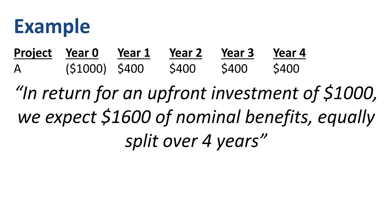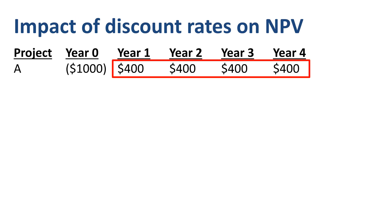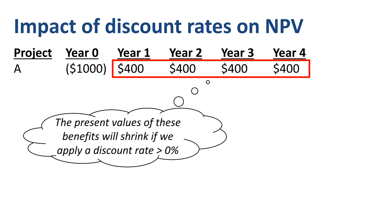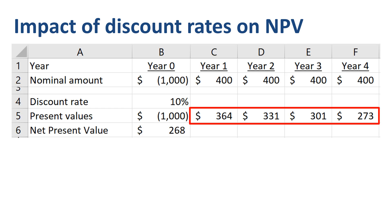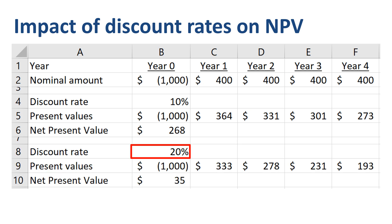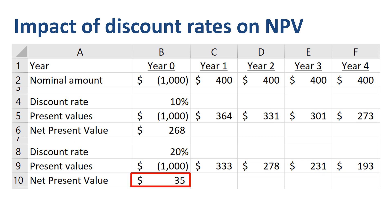Assuming you have done net present value calculations before, you probably know that the present values of these future benefits will shrink if we apply a discount rate that is higher than zero. For example, if we apply a discount rate of 10%, then the present values of the future benefits will shrink substantially versus the nominal amounts, with an NPV of $268 as a result. If we apply a higher discount rate of 20%, then the present values will shrink a lot more, with an NPV of $35 as a result.